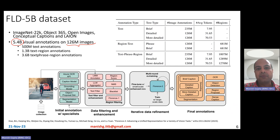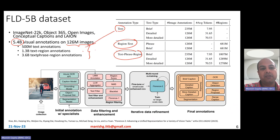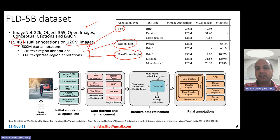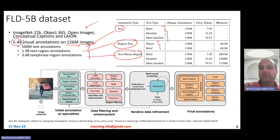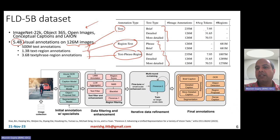There are about 500 million text annotations, 1.3 billion text-region annotations, and 3.6 billion text phrase-region annotations in this dataset. The images have been taken from five different publicly available datasets: ImageNet-22K, Object365, Open Images, Conceptual Captions, and LION. Text annotations include brief, detailed, and more detailed captions. Typically in COCO or Conceptual Captions datasets you find brief captions with about 8 tokens, but the more detailed captions can go as high as 71 tokens in this FLD-5B dataset.